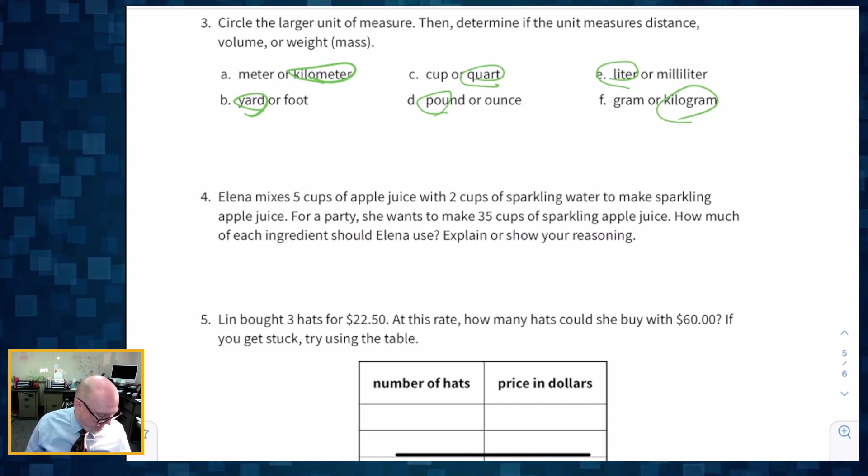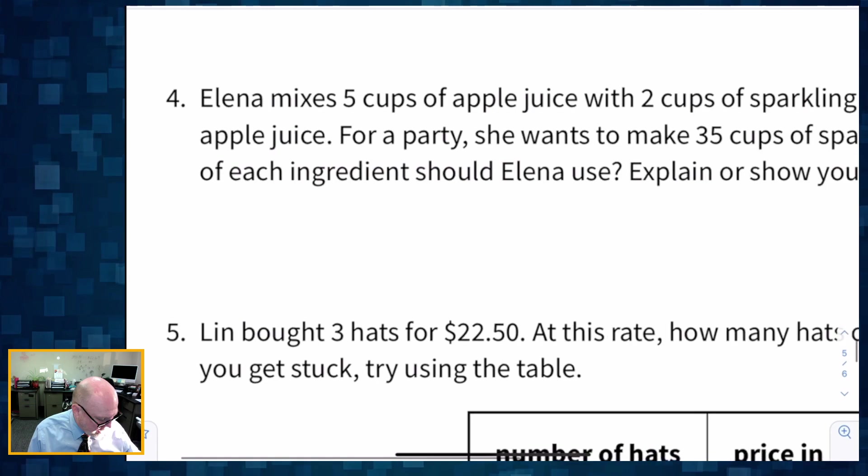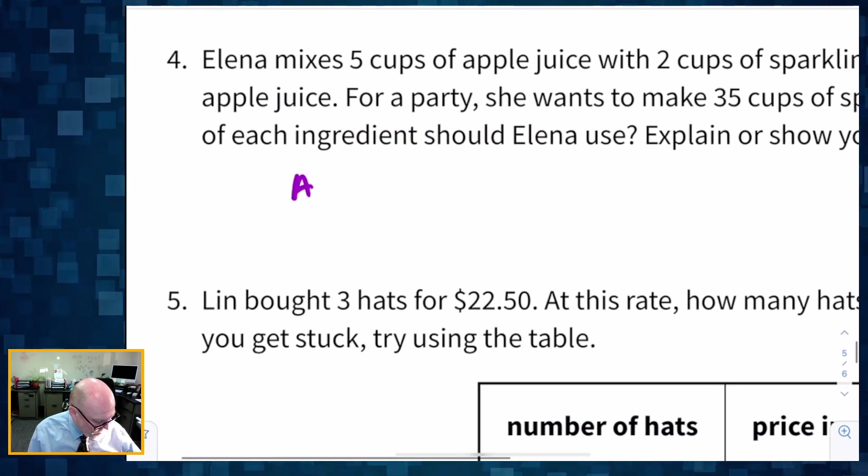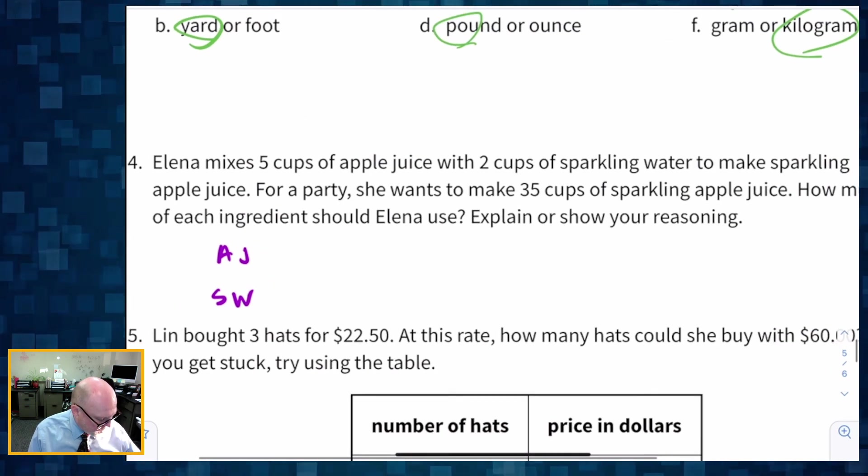There you go. So Elena mixes five cups of apple juice with two cups of sparkling water to make sparkling apple juice for a party. She wants to make 35 cups. Oh, this is a review question, isn't it? How much ingredients should Elena use? So that's, oh, this is cool. We get this one. So we've got apple juice, apple juice, and we've got sparkling water.